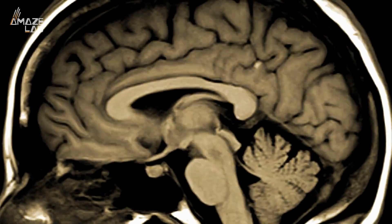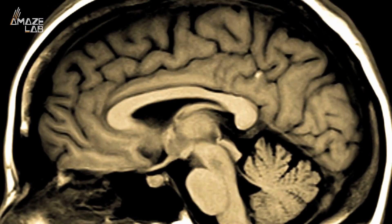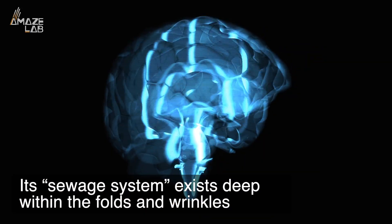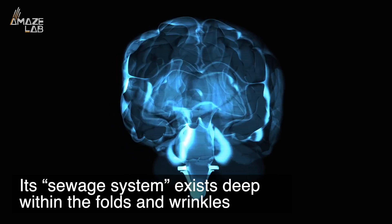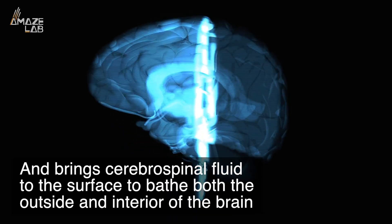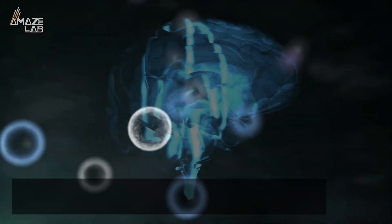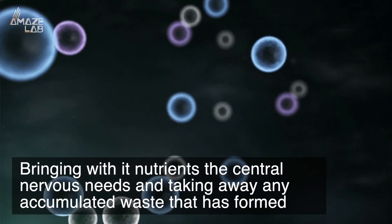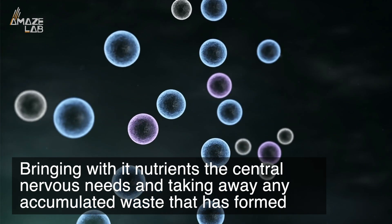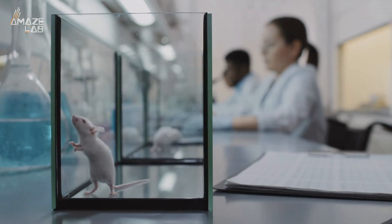Our brains are self-cleaning, however that system has never been properly understood. Its sewage system exists deep within the folds and wrinkles and brings cerebrospinal fluid to the surface to bathe both the outside and interior of the brain, bringing with it nutrients the central nervous system needs and taking away any accumulated waste that is formed.